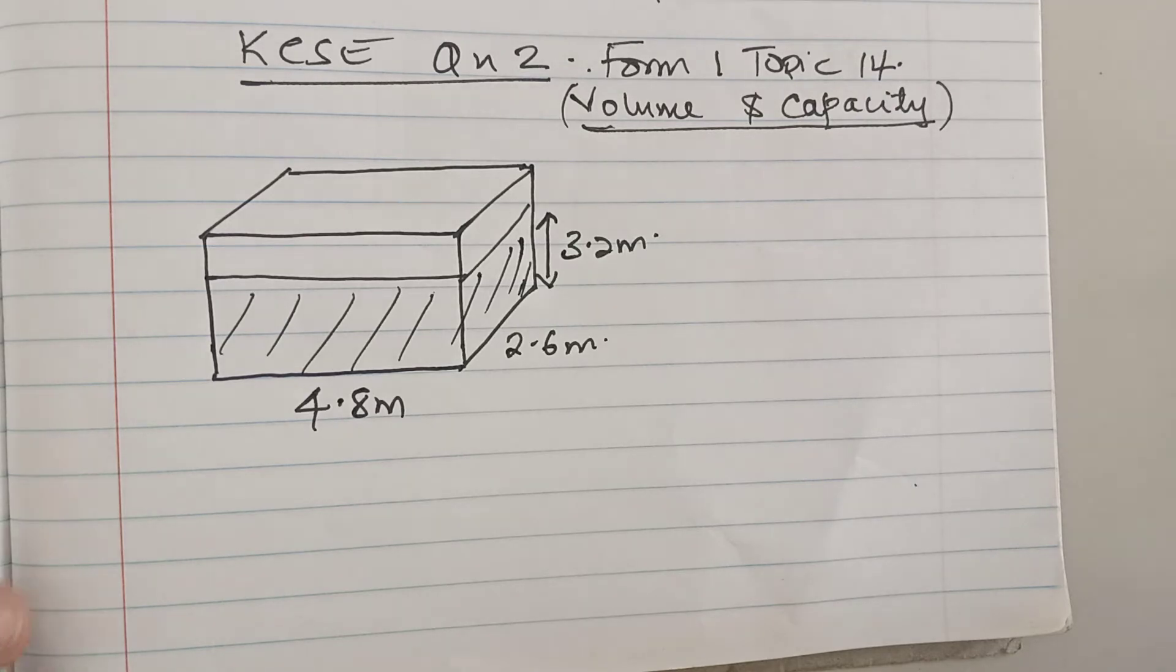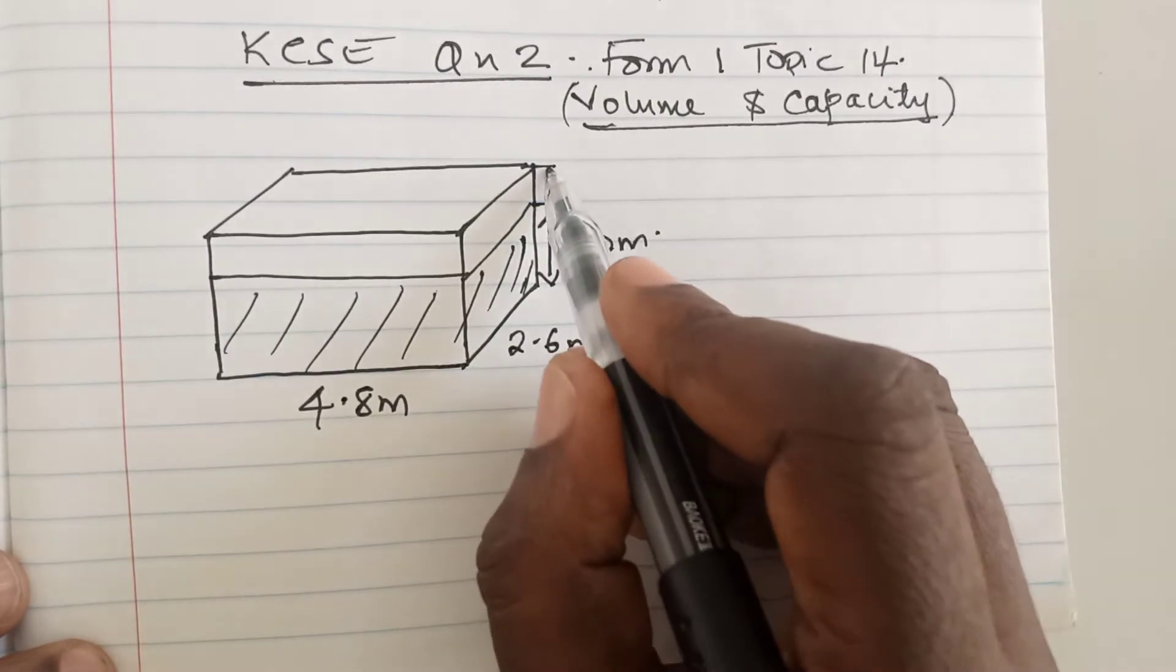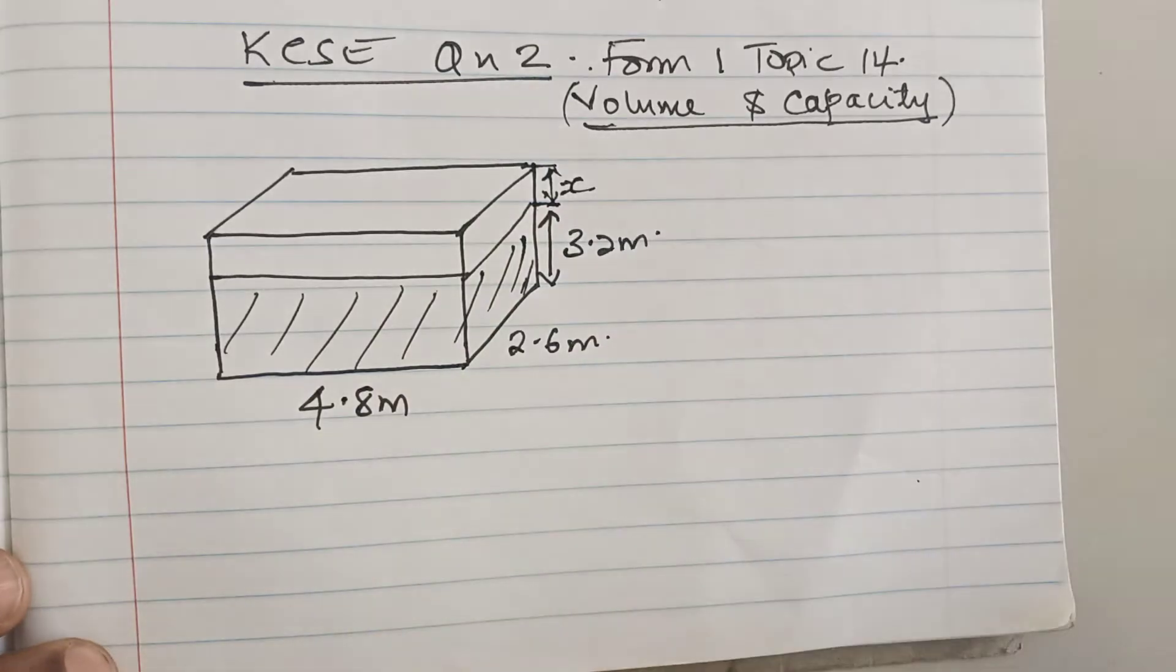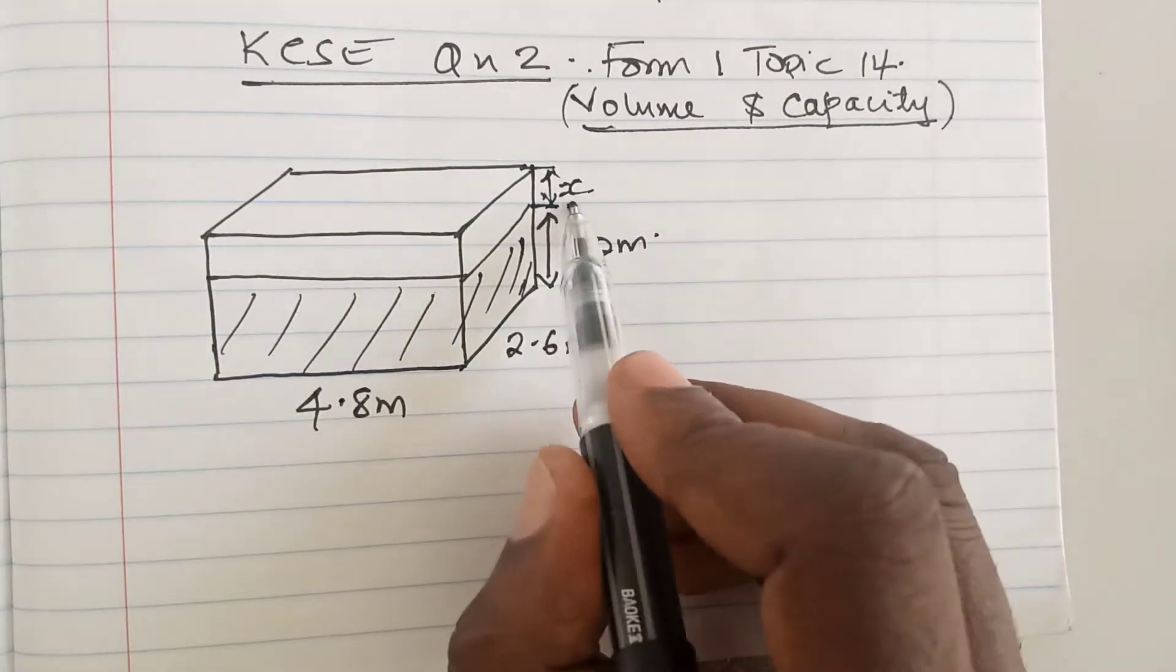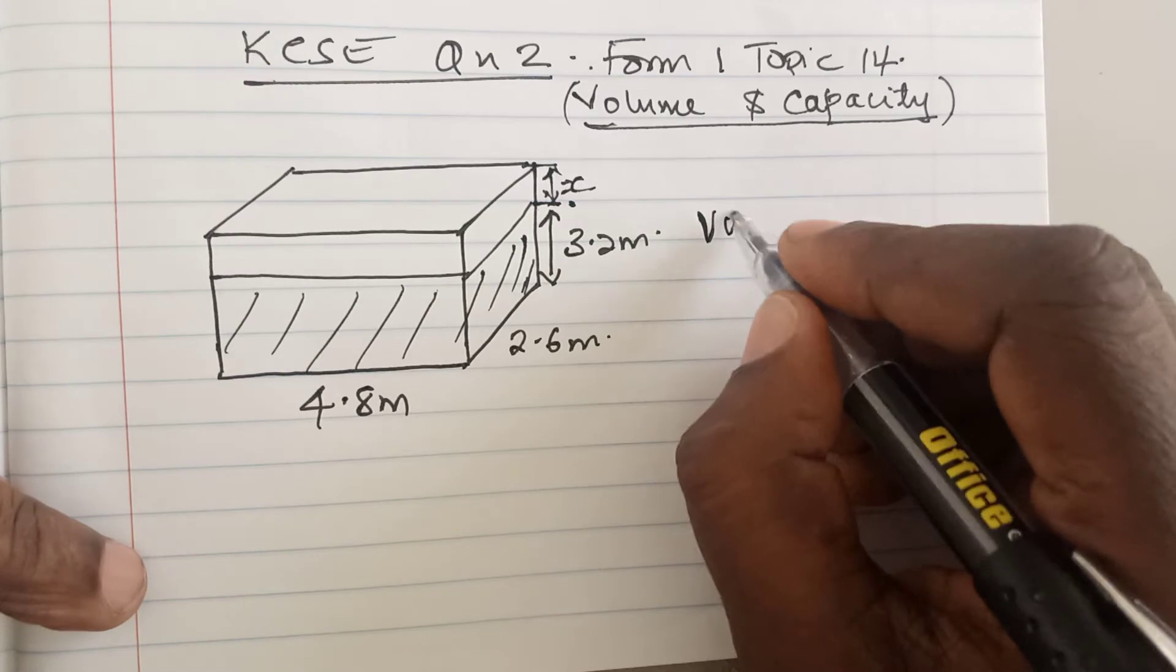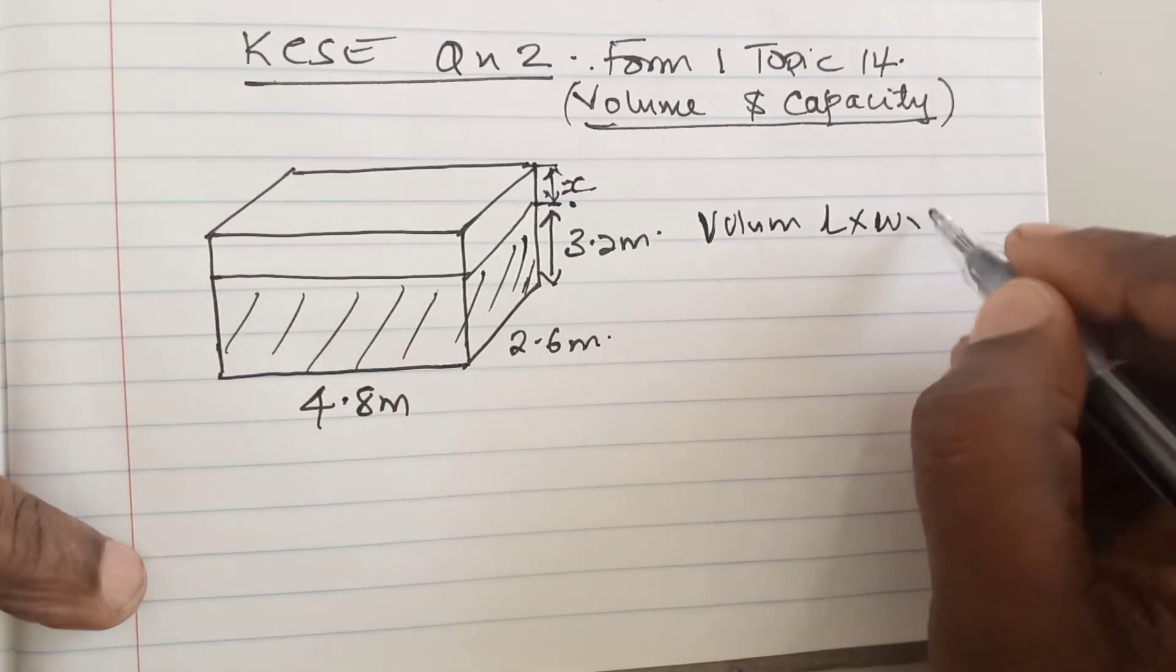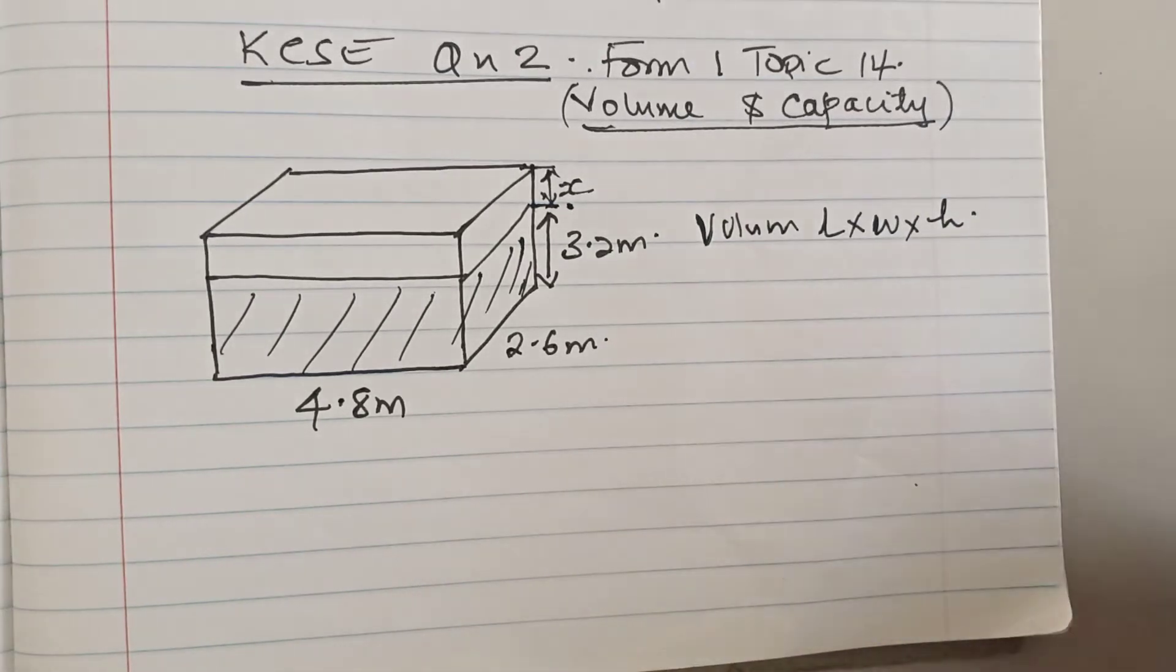Because if you were to look for the capacity of the tank, then we would have included this height, which would be of any measure, that is x meters. But water does not go beyond this particular height of 3.2 meters. So the volume of a rectangular prism, as we know, volume is length times width times height.